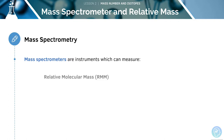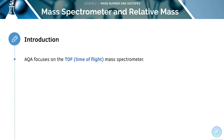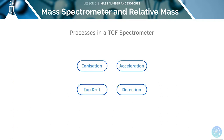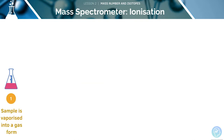Now let's look at mass spectrometry. These are instruments which are able to measure relative masses — including the relative molecular mass, the relative atomic mass, and the relative isotopic abundance. The mass spectrometer we'll focus on for AQA is a simple time-of-flight mass spectrometer, which depends on the time taken for a molecule to travel through the machine. There are four main events: ionisation, acceleration, ion drift, and detection.